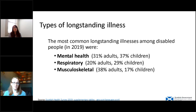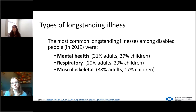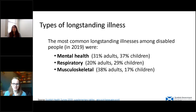We don't have figures specifically for the conditions that disabled people in relative poverty face, but looking at the overall population, the most common long-standing illnesses among disabled people as a whole in 2019 were mental health conditions, respiratory conditions, and musculoskeletal conditions. The barriers people face can vary hugely depending on their specific characteristics, and for this particular group the barriers can be really different depending on the conditions people have.